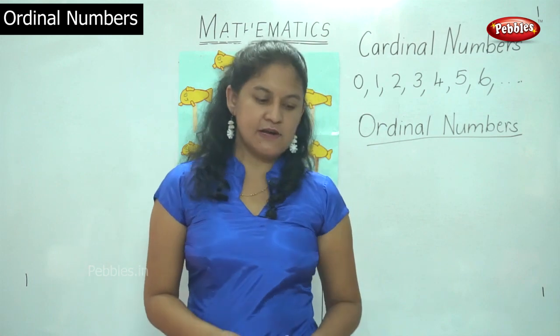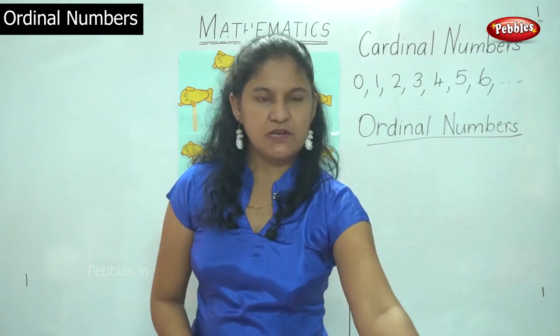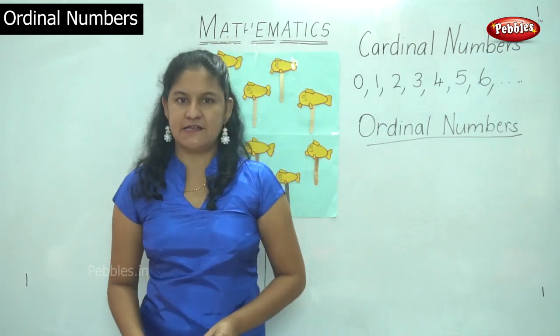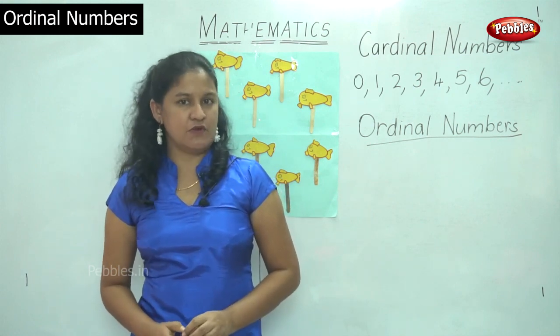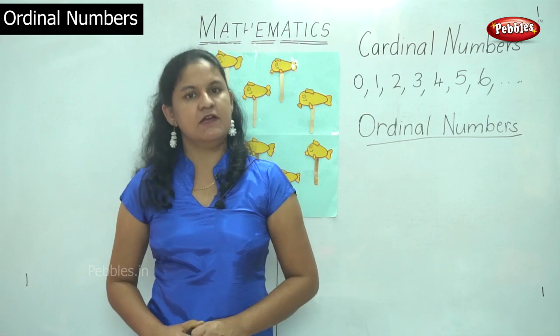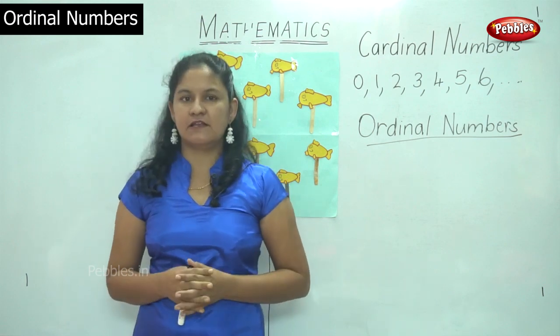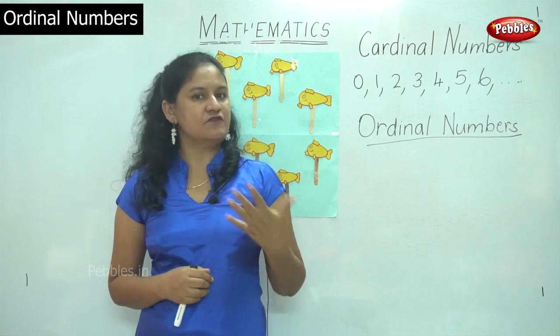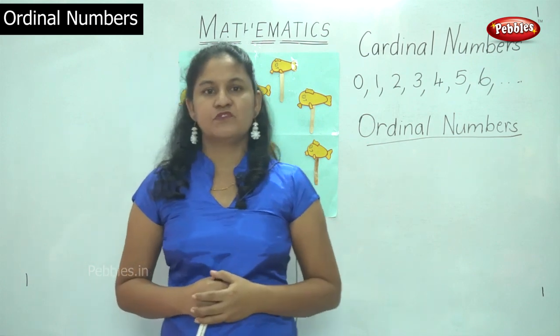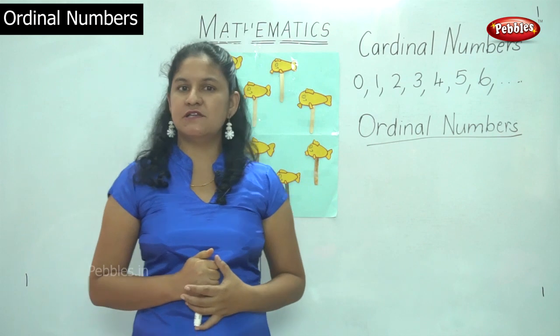We use ordinal numbers, for example, when we are running a race and when a person comes as the winner, we say he is the first, and after him the next person is the second and the third and the fourth and so on. So at that time we use ordinal numbers.